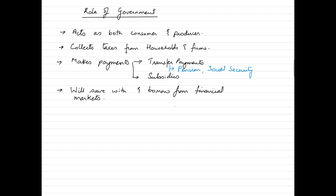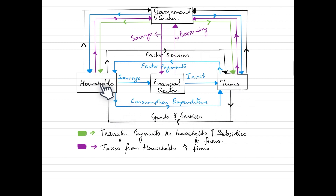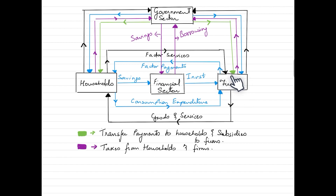This is how the three-sector model is depicted diagrammatically — households, the financial markets, and the firms. The interaction between these three in the two-sector model shows households receiving factor payments from firms, spending that income on goods and services produced by firms, saving a portion with financial markets, and financial markets investing that money with firms as borrowings.